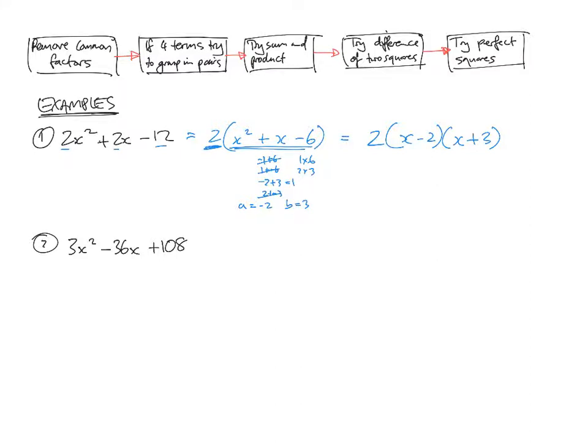Let's FOIL out these brackets. x times by x is x squared. Outers plus 3x, inners take 2x. Negative 2 times by 3, negative 6. 2x, 2x squared, positive 3x, negative 2x, plus 1x, take 6, times everything by 2.